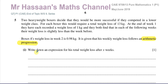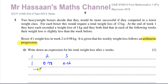So this boxer in his first week loses one kilogram. In his second week he loses 0.98 kilograms. The amount he loses each week is reducing and it's an arithmetic progression, so the third week is going to be 0.96 kilograms. You can see every time it's going down by 0.02 — this is what's called the common difference. We want to find the total amount of weight he loses over X weeks.